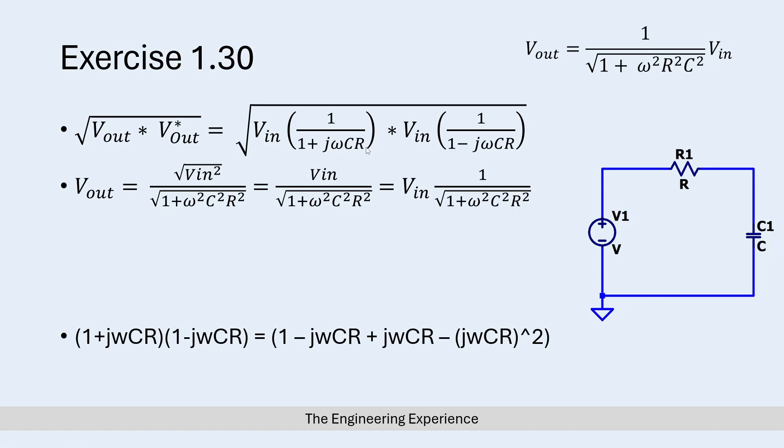Obviously your 1 would remain. The plus and the minus jωCR would cancel each other out. Your j² if you remember from the previous exercises would go to -1, so then your minus will cancel with the minus and turn to a positive, which we have over here.